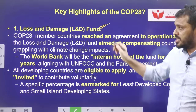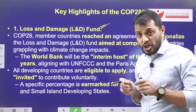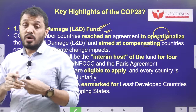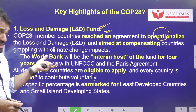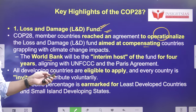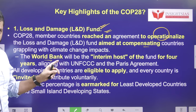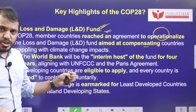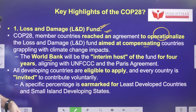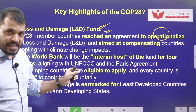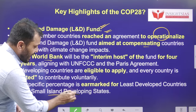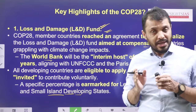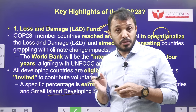The first highlight is the Loss and Damage Fund. This fund was first proposed in COP27, but now in COP28, countries reached an agreement to implement it. Temporarily, the World Bank will administrate it for the next four years. This fund is aligned with the Paris Agreement and UNFCCC. Any country can voluntarily contribute, and any country experiencing climate-related damage can apply for funds. A certain percentage will be dedicated to least developed countries and small island developing nations.